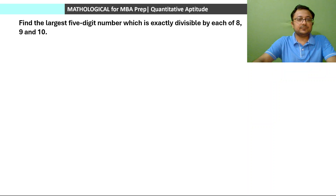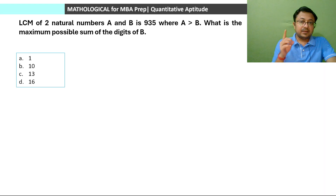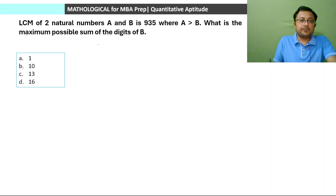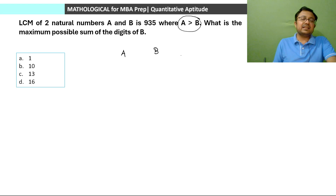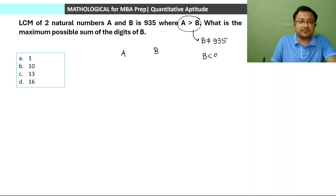Next question: LCM of 2 natural numbers A and B is 935, where A is greater than B. What is the maximum possible sum of digits of B? Since A > B and LCM = 935, B cannot equal 935, because if B were 935 then A would also be 935, making them equal — but they must be distinct.